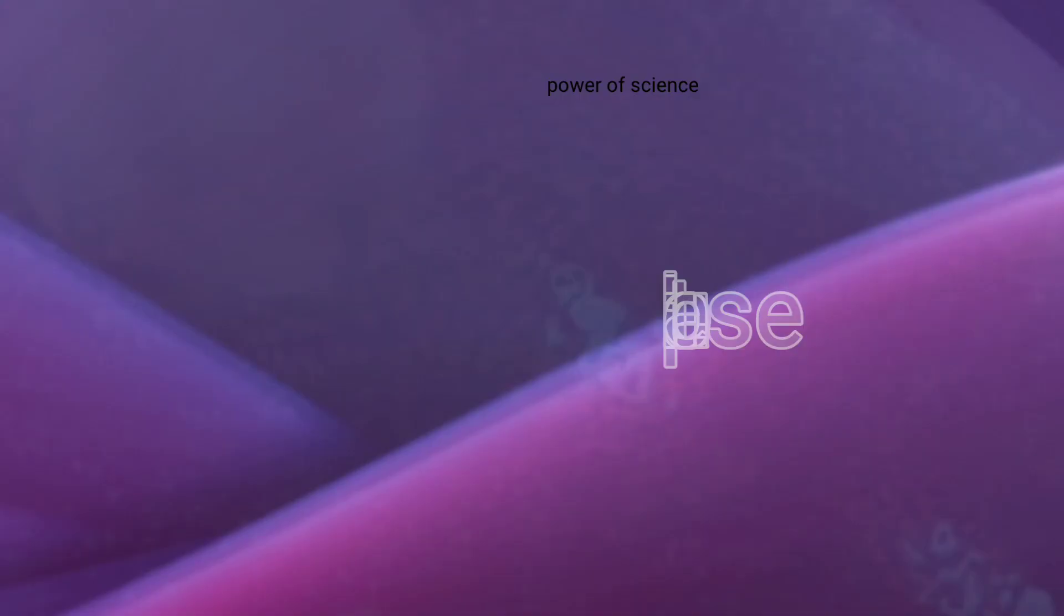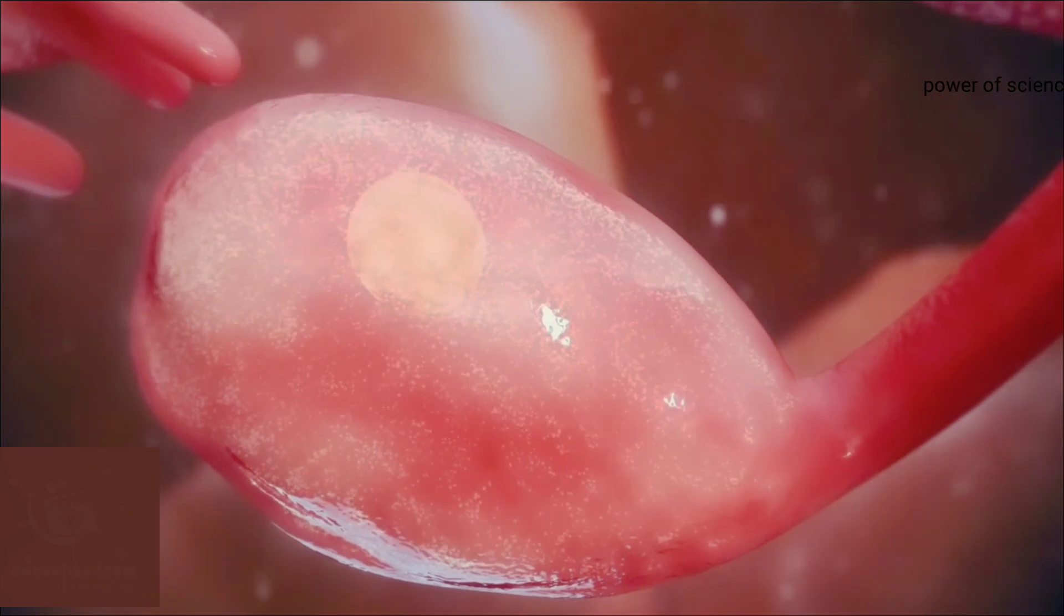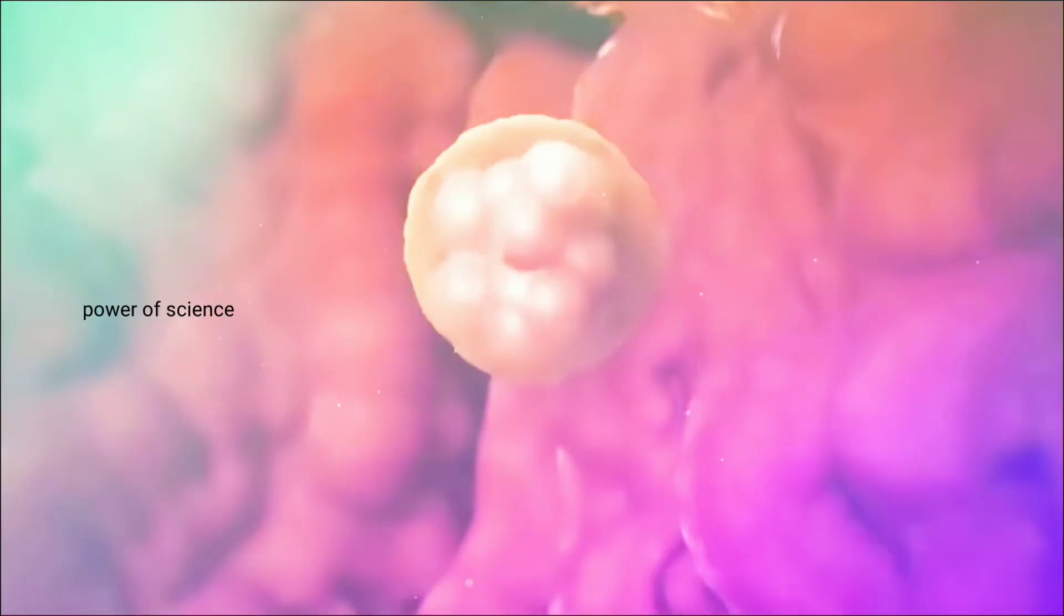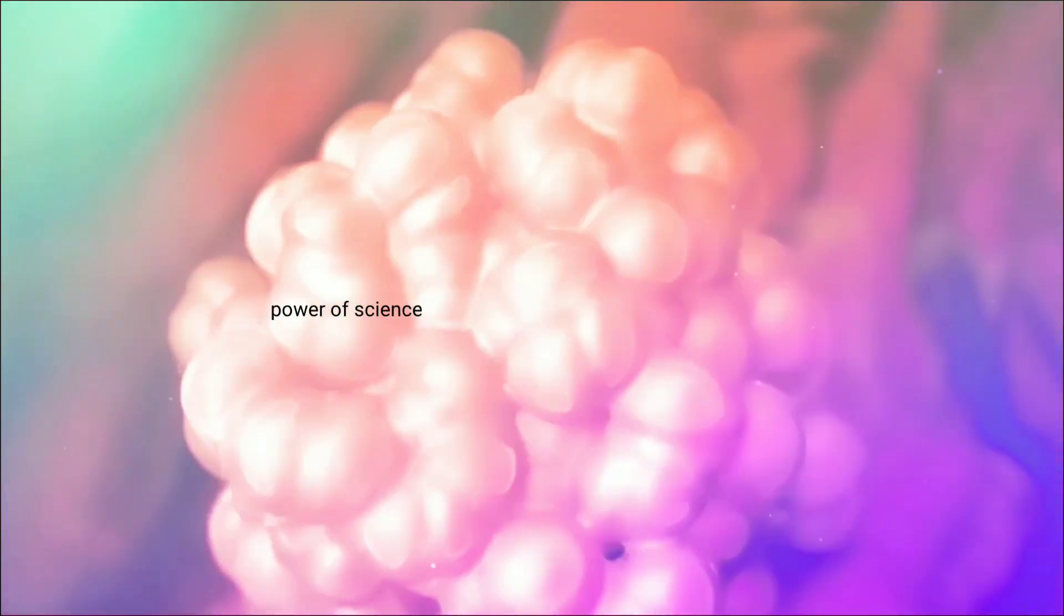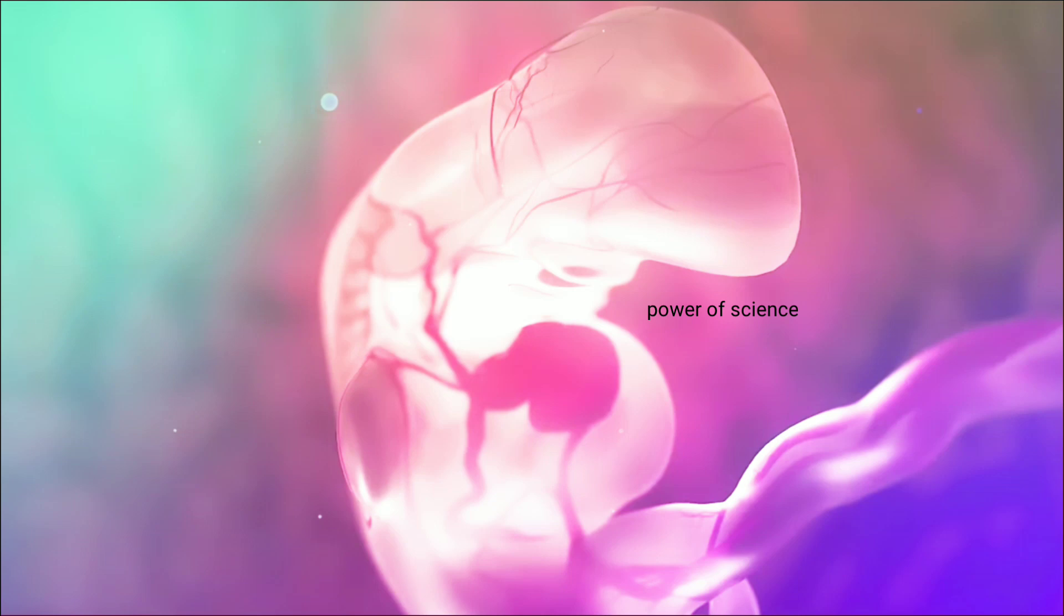Number four: Luteal phase. The luteal phase lasts from day 15 to the start of the period. During the luteal phase, if the egg is fertilized, the fertilized egg gets embedded in the endometrium and receives nourishment, and thus the baby develops.